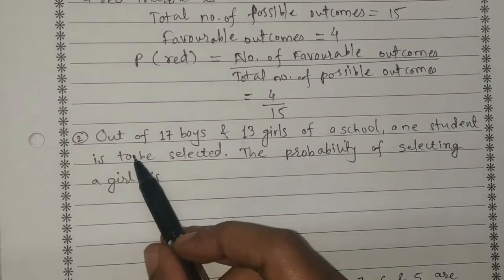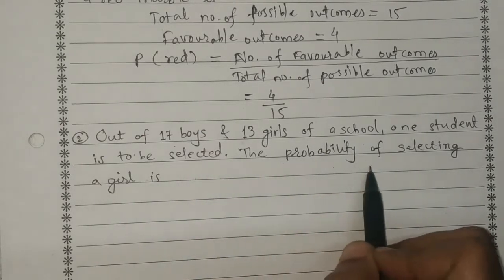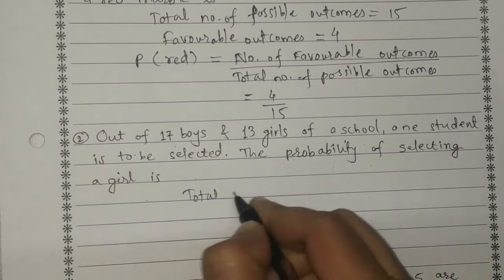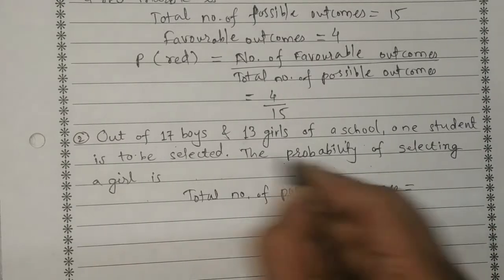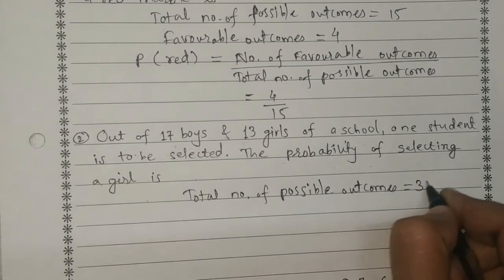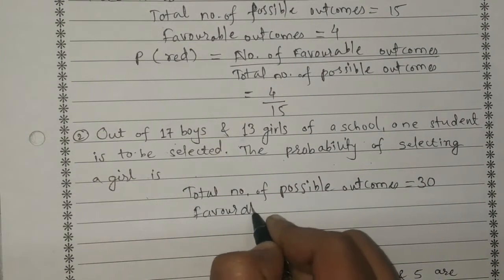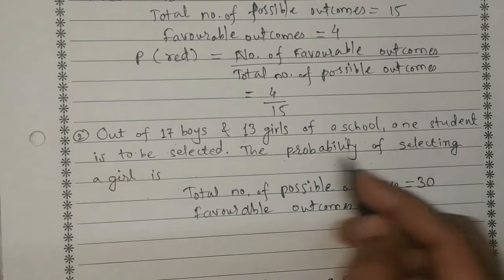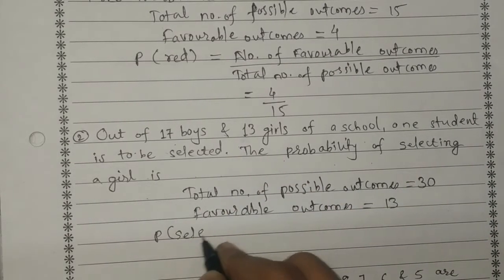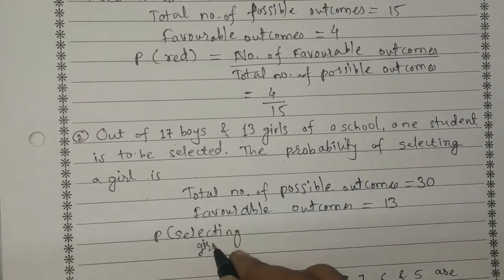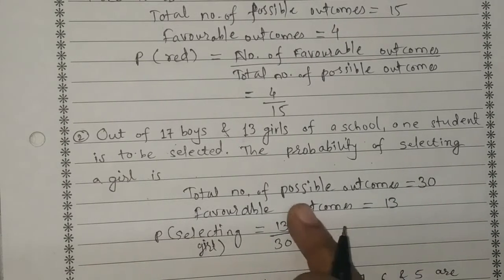The next question: out of 17 boys and 13 girls of a school, 1 student is to be selected. We have to find the probability of selecting a girl. Total possible outcomes are 17 plus 13, which equals 30. The favourable outcomes for selecting a girl are 13. So the probability of selecting a girl is 13 by 30.